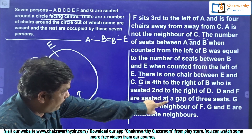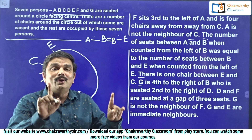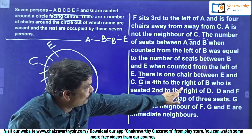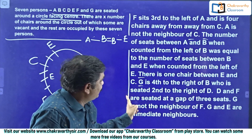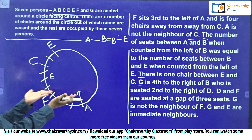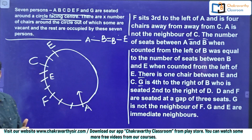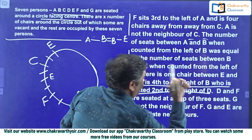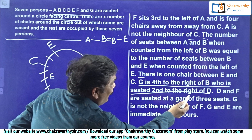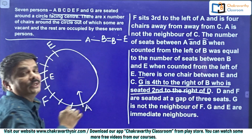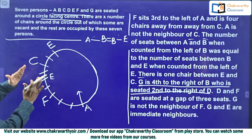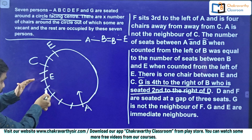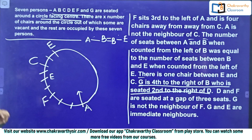Next clue: D and F are seated at a gap of three seats — meaning between D and F there should be three seats. On the left side of F: one, two, three — that would place D at the spot already occupied by C. So the only possibility left is on the right side of F: one, two, three places, and after that this place must be given to D. D's place is confirmed.